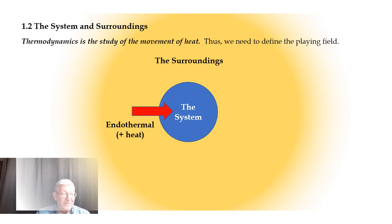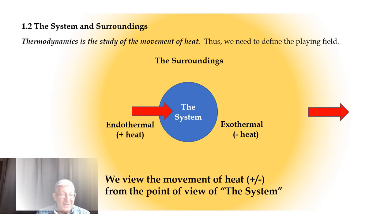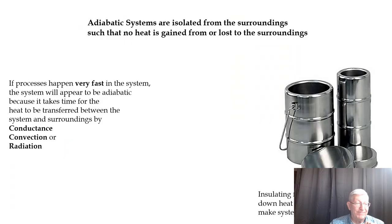If heat comes into the system from the surroundings, we call it endothermal and give it a positive sign. If heat leaves the system, it's called exothermal, and we use a negative sign. We use this plus-and-minus system to describe the movement of heat between the system and the surroundings. The system can be defined any way you want — it might be the contents of a flask or a box. Once you've defined the system, everything else becomes the surroundings by definition.